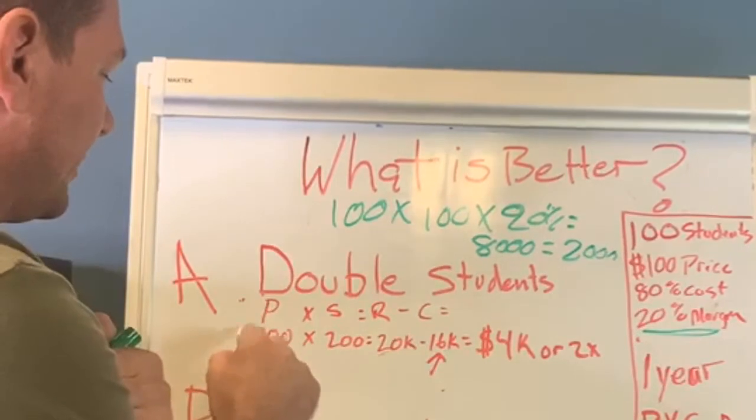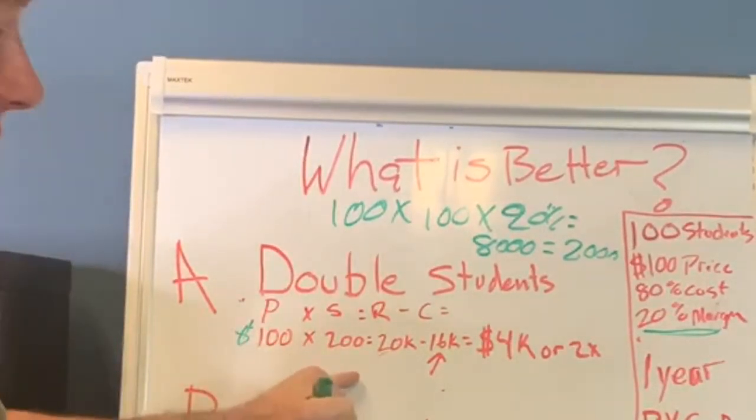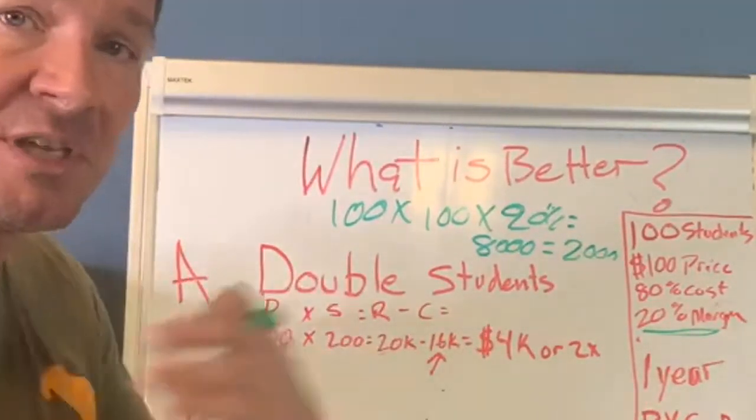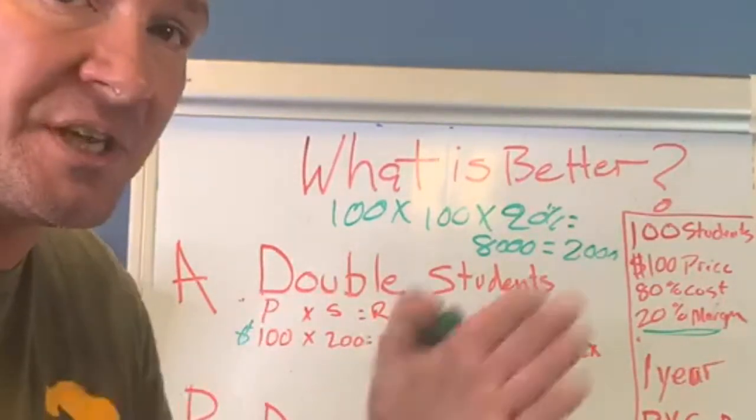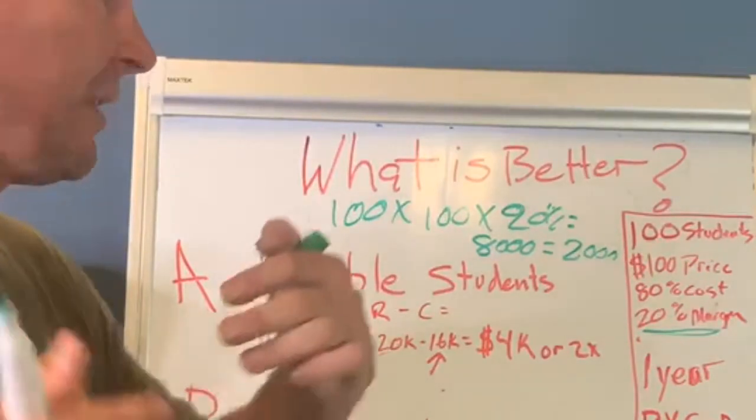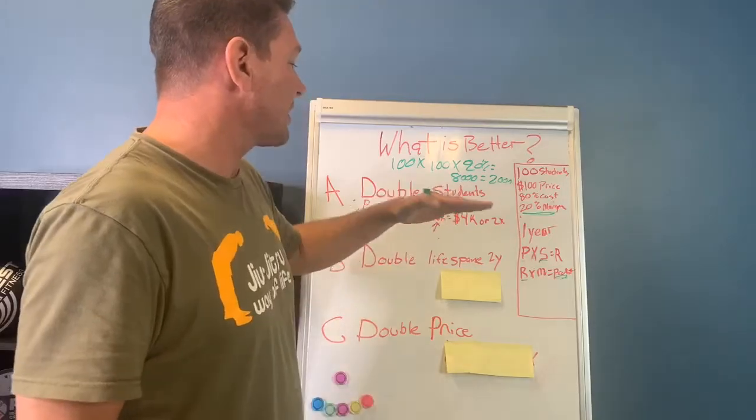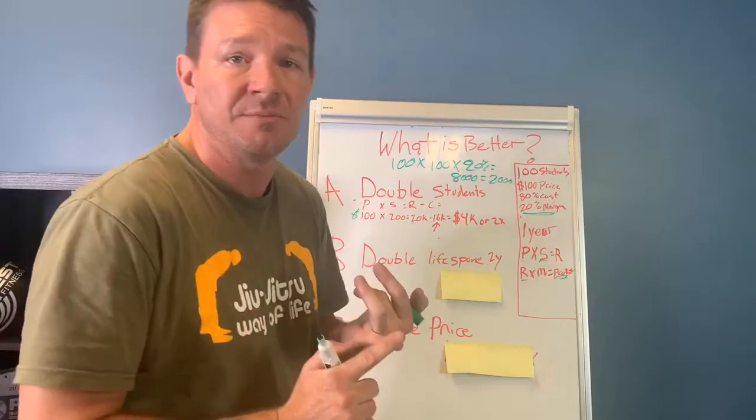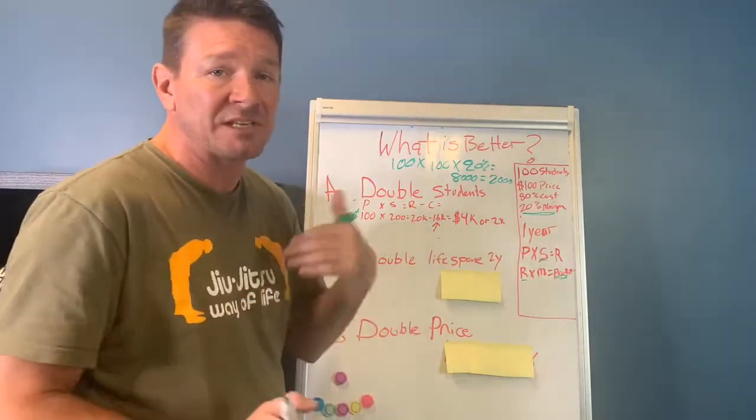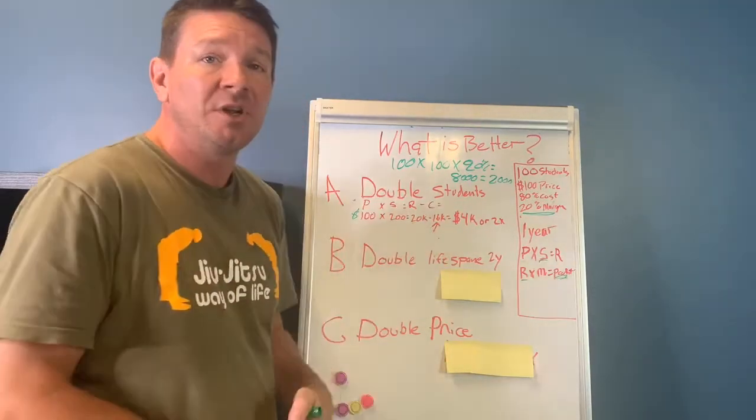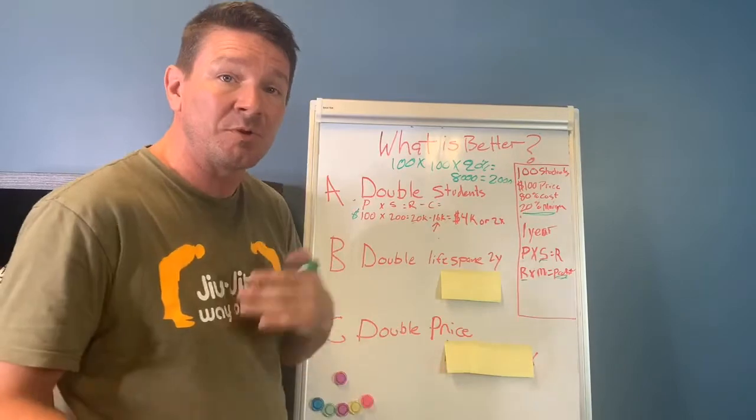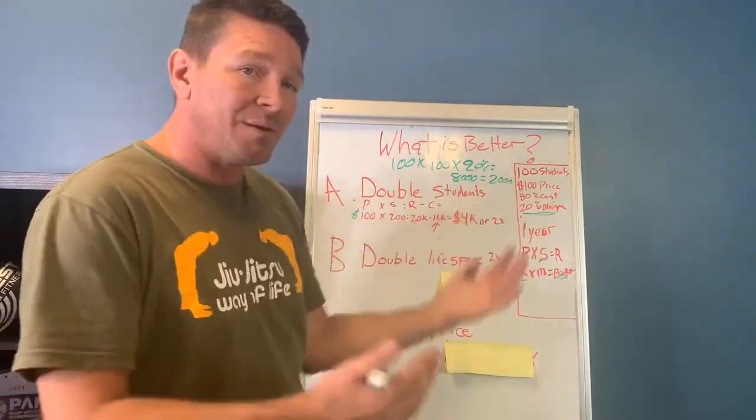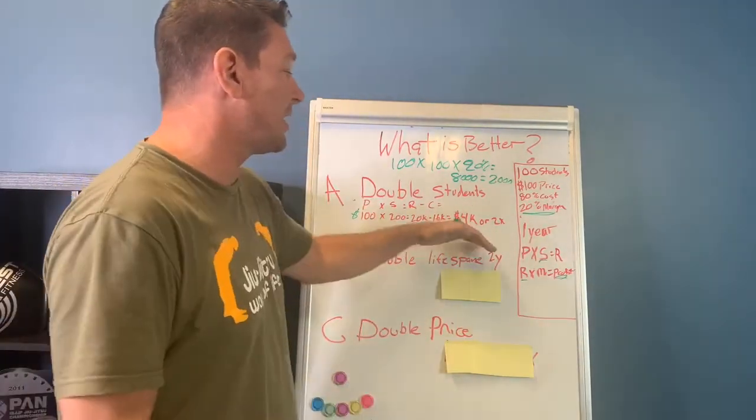So if we double the students, right? We're still at $100 for our price point. We're at 200 students now. That's going to put us at $20,000 a month. That's great. But also typically what we're going to see with that is our margin, even if we keep our margin the same, we may be able to reduce or add a little bit to that margin. But let's just keep it the same for ease. Now our cost has gone from $8,000 to $16,000. We need more space, more instructors, more insurance, more electric, more classes, more advertising. All of those things will add up. And so now we've basically doubled our $2,000. So we're going to be making $4,000 a month. So that's great. We double our students, we double the amount of money that we make.